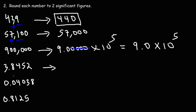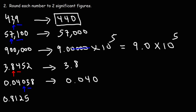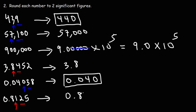For the next one, looking at the 4 tells us we need to round down instead of up, so 3.8452 becomes 3.8. For 0.04038, the second significant digit is a 0. To the right of that we have a 3, so we round down, giving us 0.040. The final zero is significant because of the decimal point, so we have two significant figures. For 0.8125, looking at the 2, we round down, so we could just leave this as 0.81.